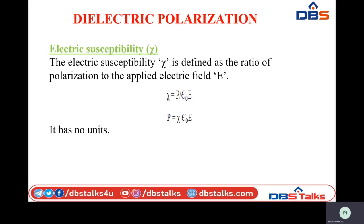Another important characteristic is electric susceptibility (χ), defined as the ratio of polarization to the applied electric field: χ = P / (ε₀ × E). The net dielectric polarization obtained for an applied electric field E is specified by electric susceptibility. We can write polarization as P = χ × ε₀ × E. Electric susceptibility has no units.